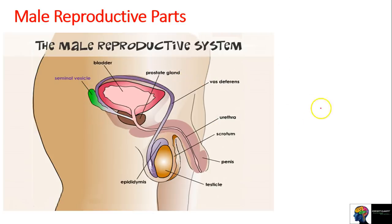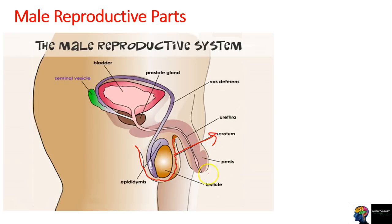This is the testicle. The singular form of testis is testicle - this one testis is called a testicle. It is located inside a pouch. This testicle is inside a pouch, and this pouch - the covering layers you can see - is called the scrotum. The testicle is inside the scrotum.